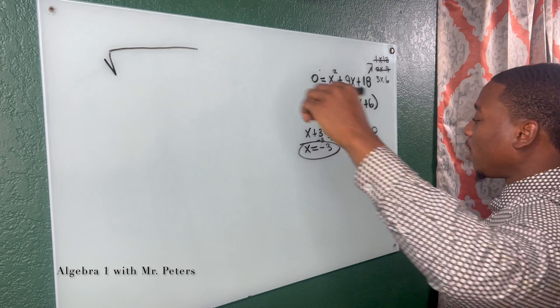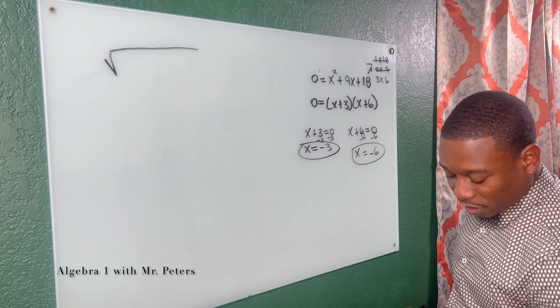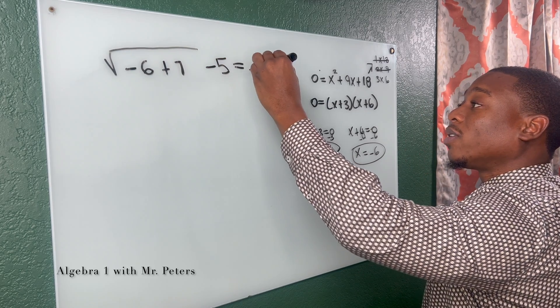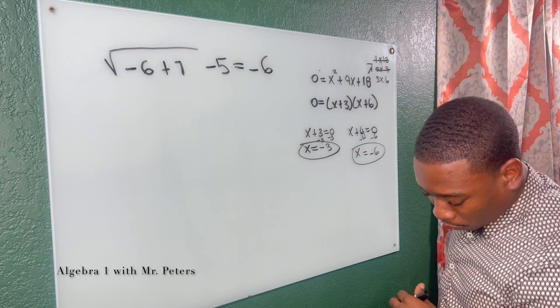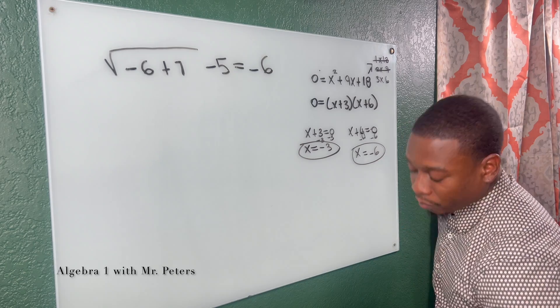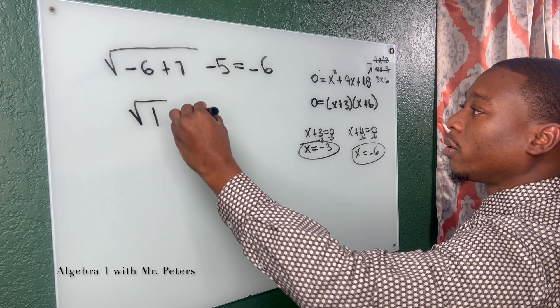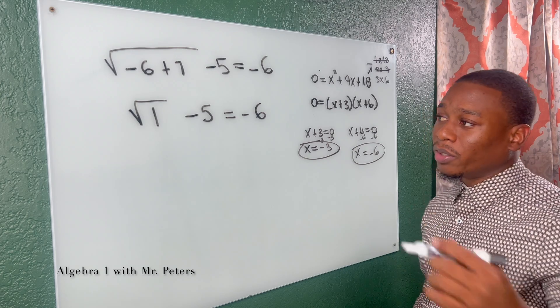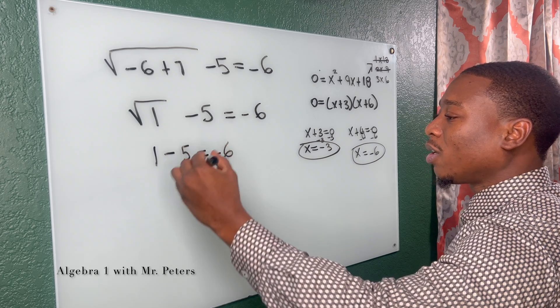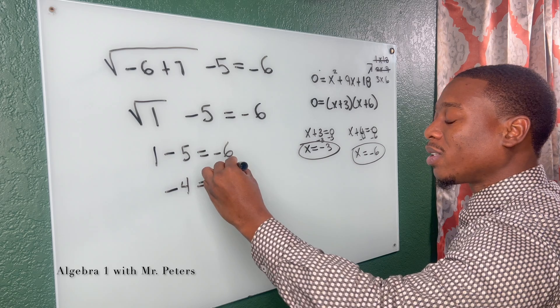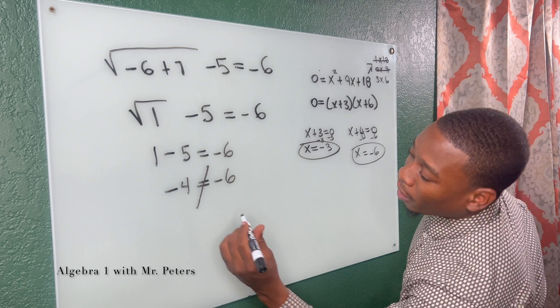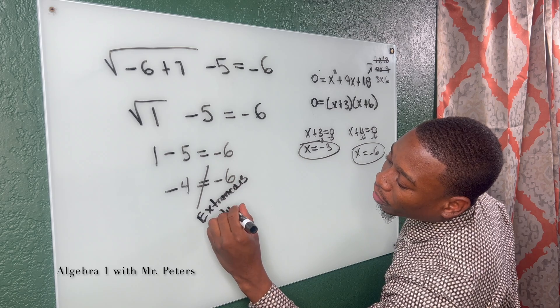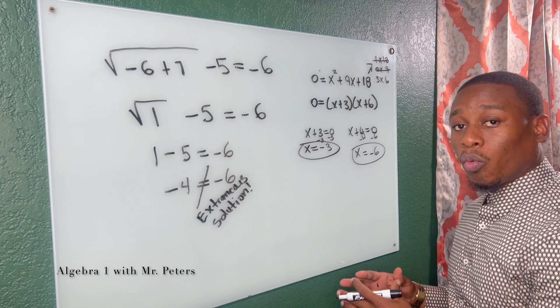I'm going to start off with six. So anywhere I see X, I'm going to substitute in negative six. So I'm going to have negative six plus seven minus five is equal to negative six. So now at this step, what we're going to do is just simplify. So I had the square root of one minus five is equal to negative six. So we don't talk about the square root of one much, but guys, it's just one. So now we say one minus five is equal to negative six. So we have negative four is equal to negative six. That is not true. So guess what this means? X minus six is an extraneous solution. And the only way that we're going to figure this out is if we plug it back into the original equation and check.